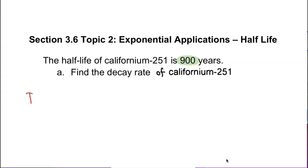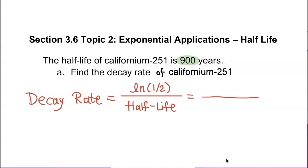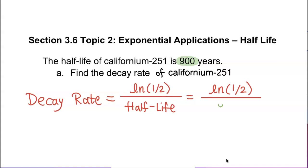Well, to find the decay rate, we can use this decay rate formula: natural log of one-half divided by half-life. So, for Californium-251, whose half-life is 900 years, we will be dividing natural log of half by 900.